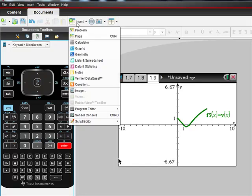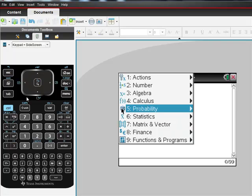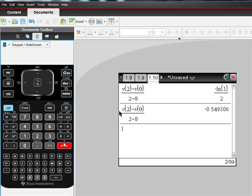This is what you want to do. You can do it on your calculator just this way. I'm going to go back to the calculator. Control division. Check this out. Control division. V of 2 minus v of 0 over 2 minus 0 equals. What you can do there is hit control division and you can get negative 0.549. I'm going to go back here.